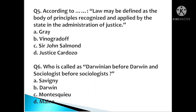Question number 5: According to whom was law defined as 'a body of principles recognized and applied by the state in the administration of justice'? A. Gray, B. Vinogradoff, C. Sir John Salmond, D. Austin/Cardozo. Question number 6: Who is called Darwinian before Darwin and socialist before socialists? A. Savigny, B. Darwin, C. Montesquieu, D. Maine. This question is very important.